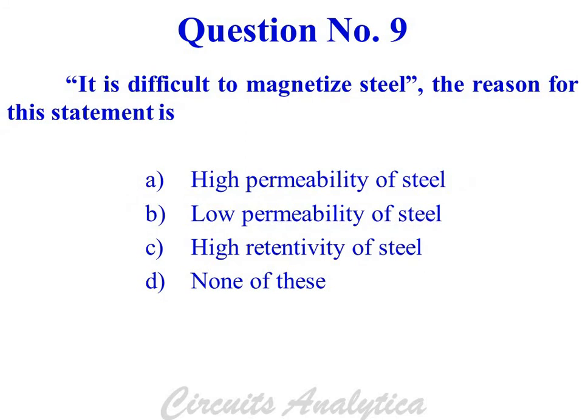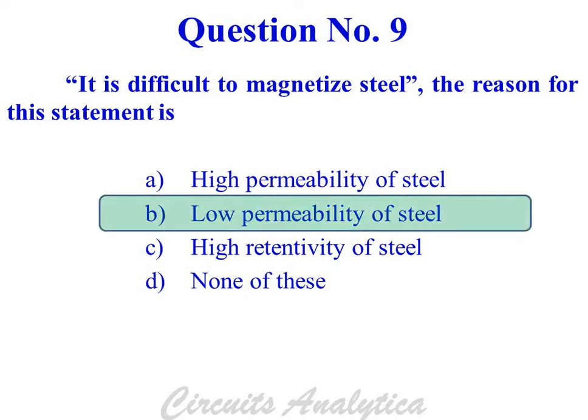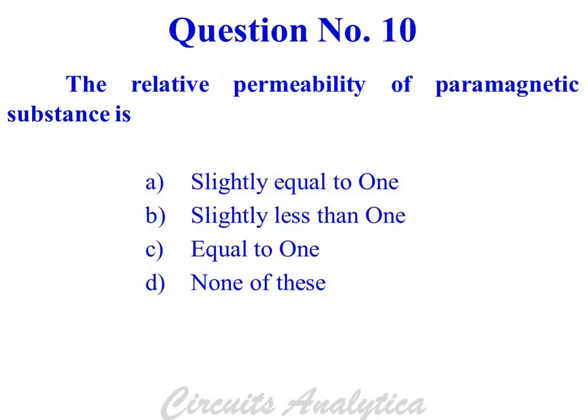It is difficult to magnetize steel. The reason for this statement is the low permeability of steel. The relative permeability of a paramagnetic substance is slightly equal to one.